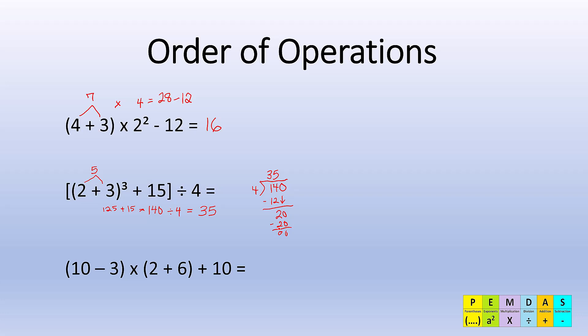Let's look at the last one. I have two sets of parentheses. Since I have two sets of parentheses, it really doesn't matter which one I do first, but we might as well start from left to right. So 10 minus 3 is 7, 2 plus 6 is 8. Now I can do my multiplication. 7 times 8 is 56.